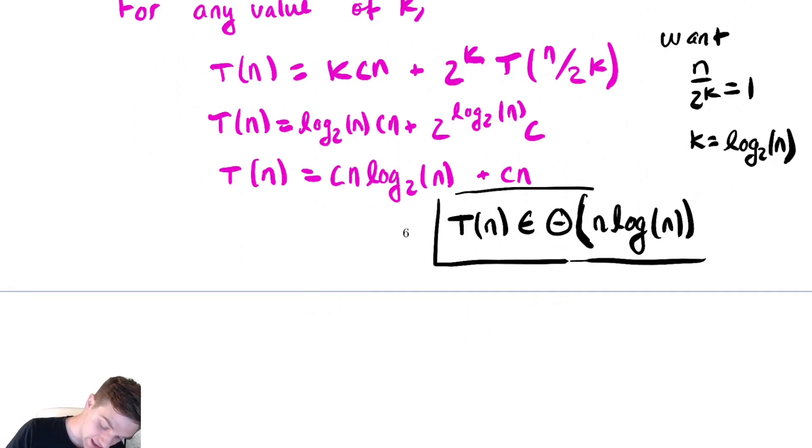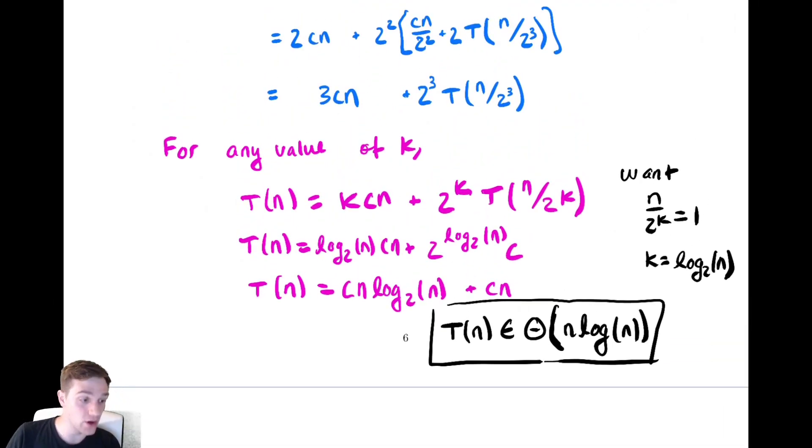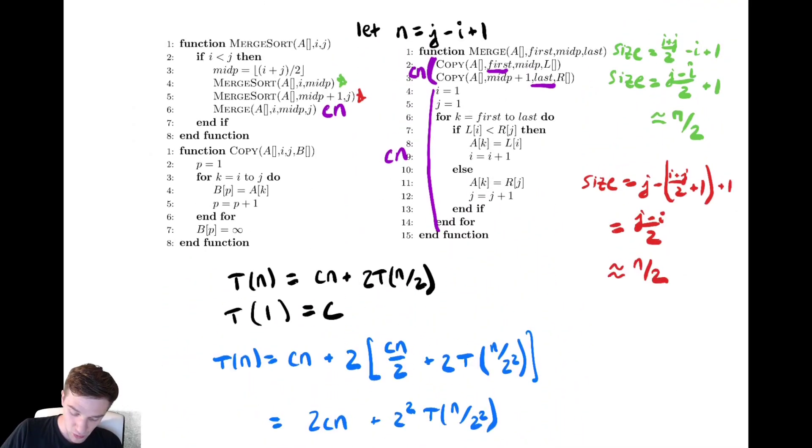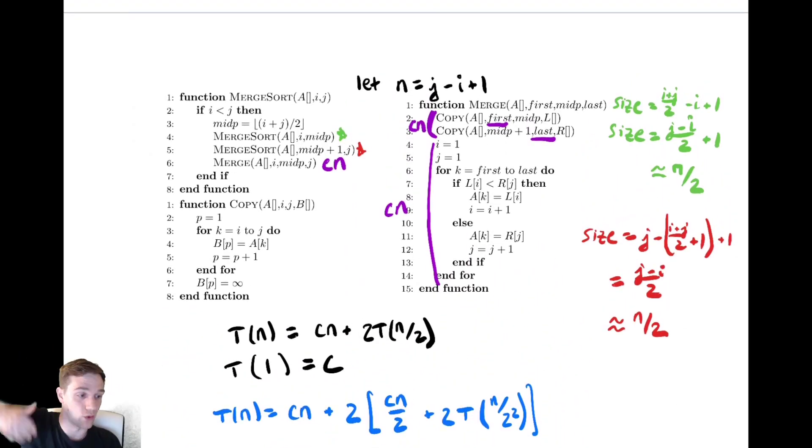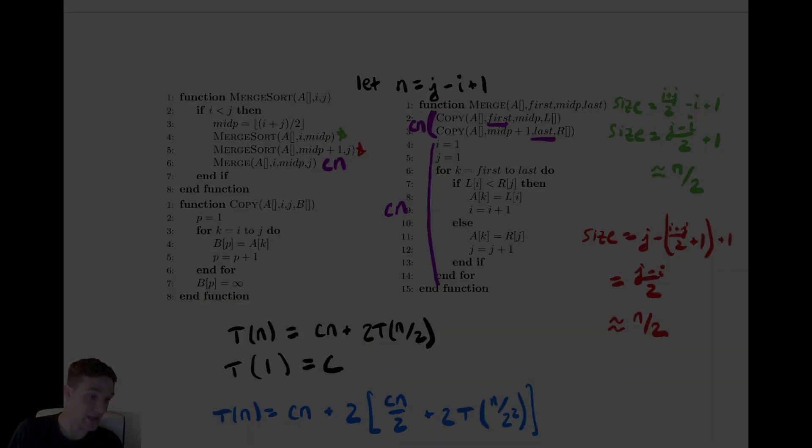So that's going to be our complexity for merge sort. This is better than the sorting algorithms we've seen already. So we've seen selection sort and in selection sort that took theta of n squared. This is asymptotically better than selection sort. And the analysis isn't too bad. We could have also used a recursion tree to solve this, but we solved it via the substitution method. You can use whatever methods you think are appropriate for a problem. The one thing to be careful of is just getting the sizes right for the recursive calls that we're making.